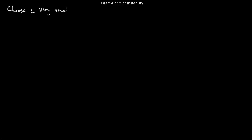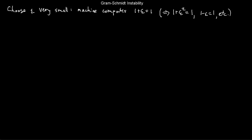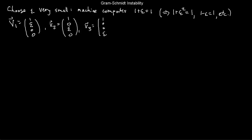Let's do a quick example. I'm going to choose a number epsilon that is very small — so small that when I plug it into my computer and add 1 plus epsilon, I'll get 1. You can do this on your calculator: there are numbers small enough that adding them to 1 just gives back 1. This implies that 1 − ε = 1, and 1 + ε² = 1, and so on. For the purposes of computation, the machine essentially thinks epsilon is 0. So here are some vectors: v1 = (1, ε, 0, 0), v2 = (1, 0, ε, 0), and v3 = (1, 0, 0, ε). Let's do the classical Gram-Schmidt algorithm on these and see what happens.